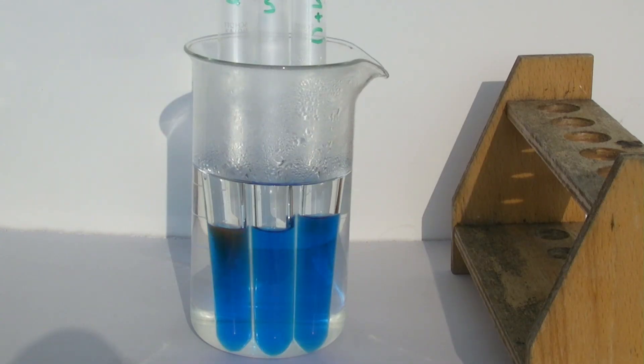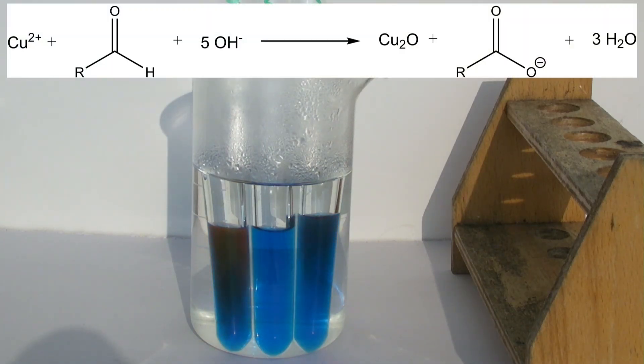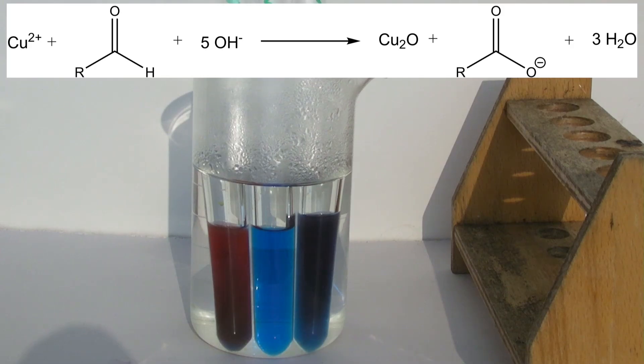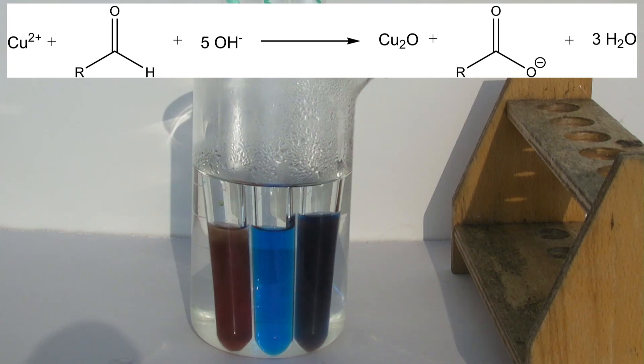In the Fehling's test, the following reactions take place. The copper ions are reduced from the oxidation state of plus 2 down to plus 1, which causes copper oxide to form and precipitate out. As an example, an aldehyde is used, which is oxidized to a carboxylic acid in the reaction. This is deprotonated due to the basic conditions.